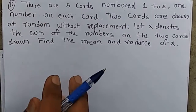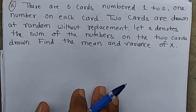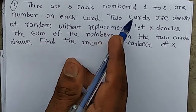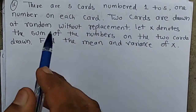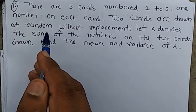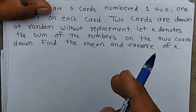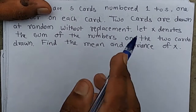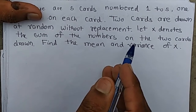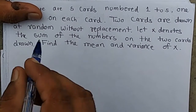Good afternoon class. This is question number 16 of exercise 26D. There are 5 cards numbered 1 to 5, one number on each card. Two cards are drawn at random without replacement — meaning the drawn card is not put back. Let X denote the sum of the numbers on the two cards drawn. Find the mean and variance.